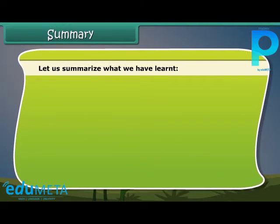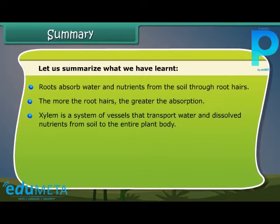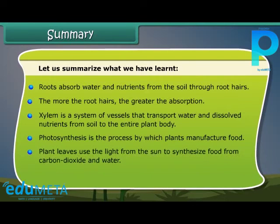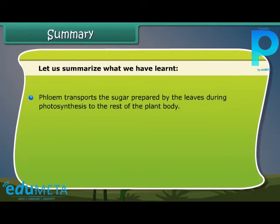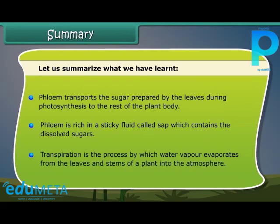Let us summarize what we have learned. Roots absorb water and nutrients from the soil through root hairs; the more the root hairs, the greater the absorption. Xylem is a system of vessels that transports water and dissolved nutrients from the soil to the entire plant body. Photosynthesis is the process by which plants manufacture food — plant leaves use sunlight to synthesize food from carbon dioxide and water, producing sugar and oxygen. Phloem transports the sugar prepared during photosynthesis to the rest of the plant body and is rich in a sticky fluid called sap containing dissolved sugars. Transpiration is the process by which water vapor evaporates from the leaves and stems of a plant into the atmosphere.